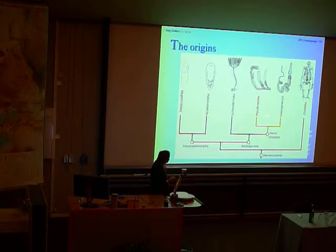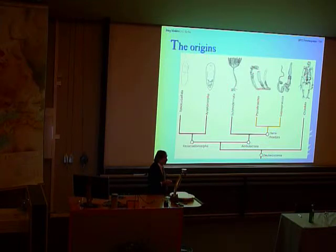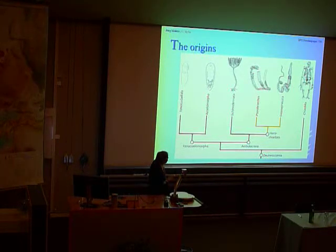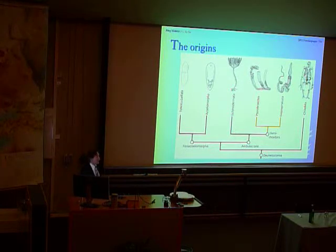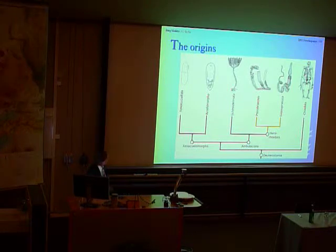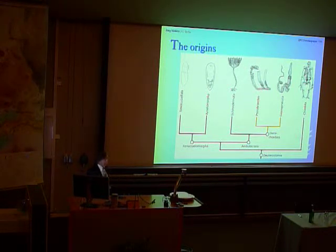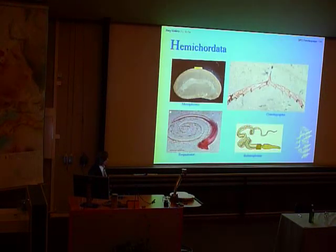Modern DNA analysis indicates that these can be interpreted either as sister groups as shown here, but there's also a different interpretation that derives the pterobranches from within the enteropneusts, and so makes the enteropneusts a paraphyletic group. So it's not yet entirely settled, and all of that has to do with the tiny size and the coloniality of the pterobranches or the graptolites.